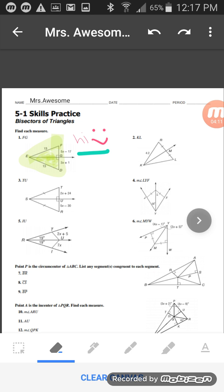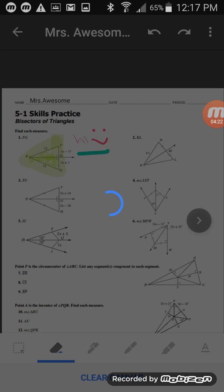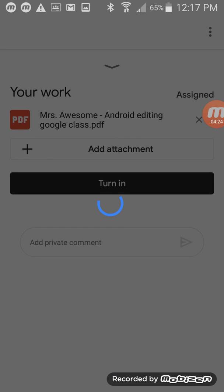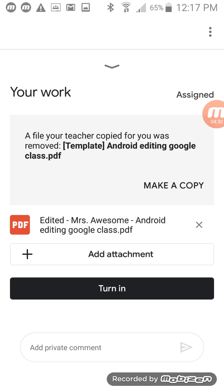Now, how to submit. To submit, you're going to go to the very top right hand corner where the three dots are. Now what you're going to do is click save. It's automatically saving all of your work. Now notice how it says Miss Awesome Android editing Google class dot PDF. It's going to say now edited. It no longer says the other version, it says edited.